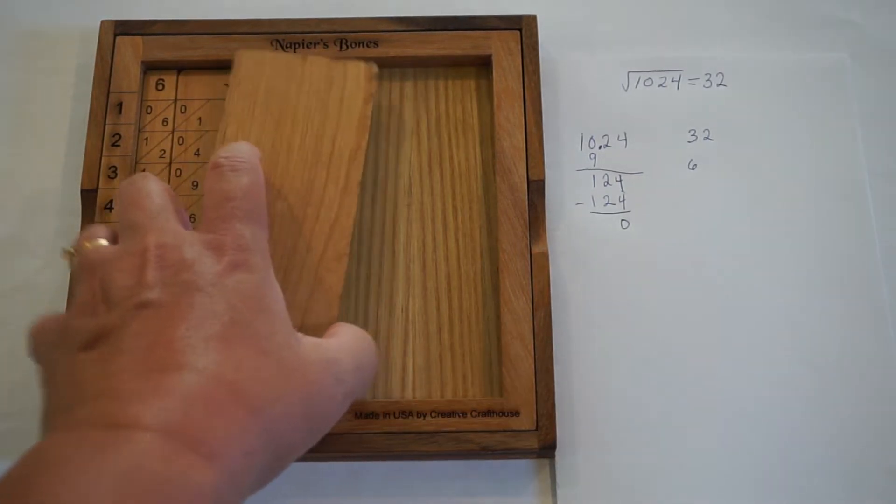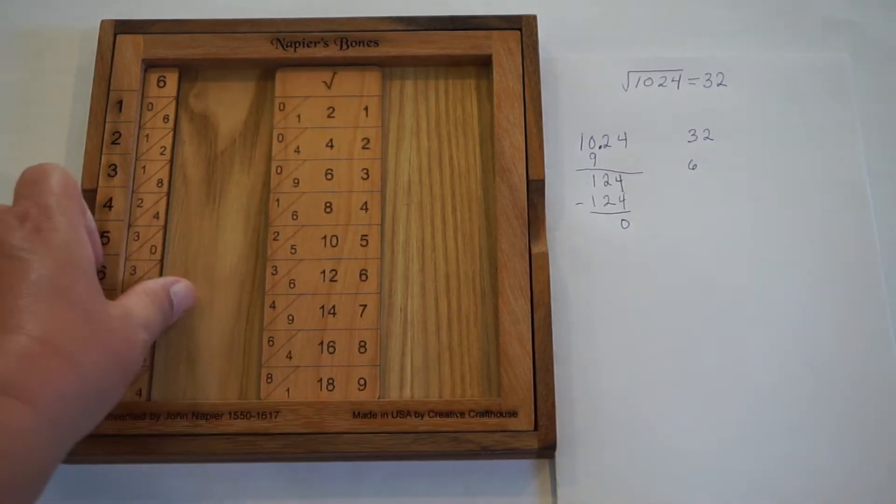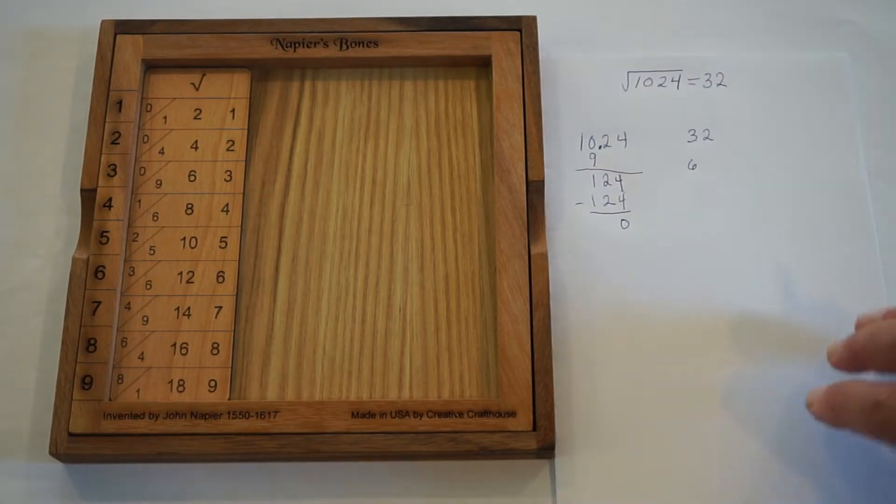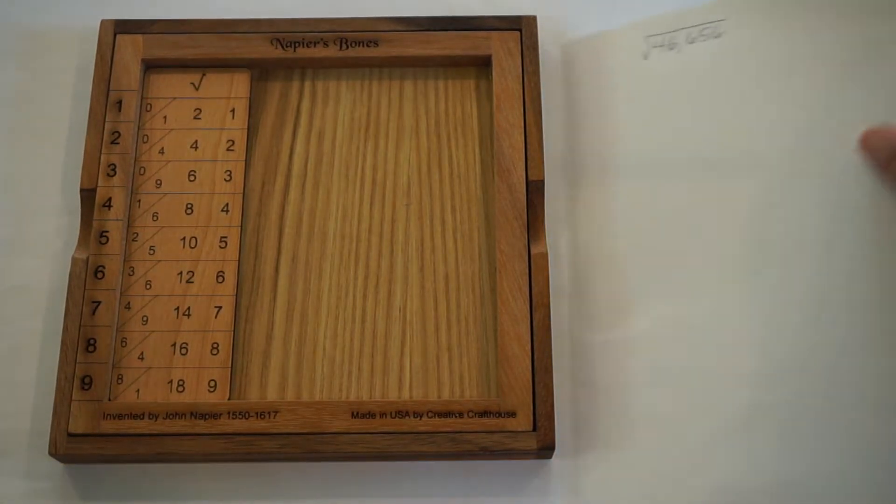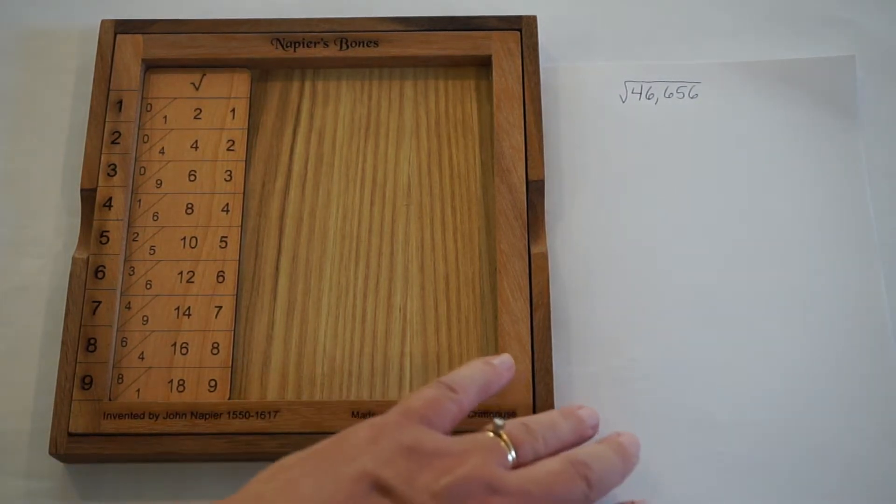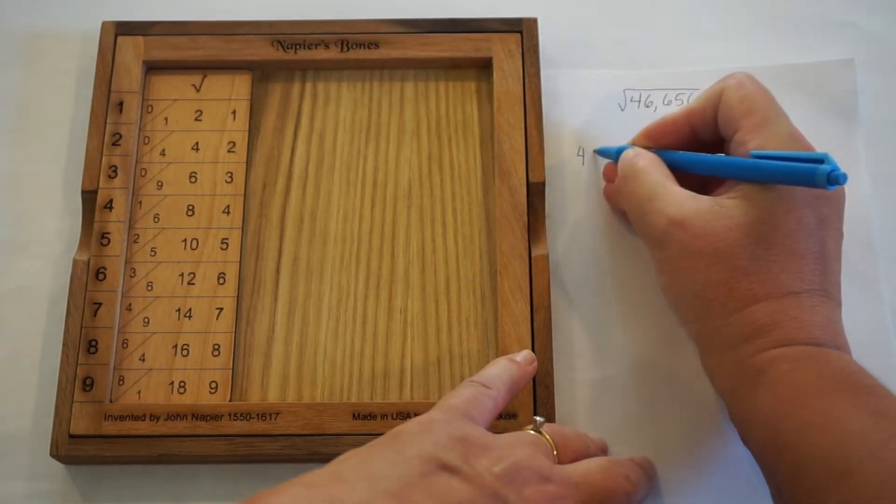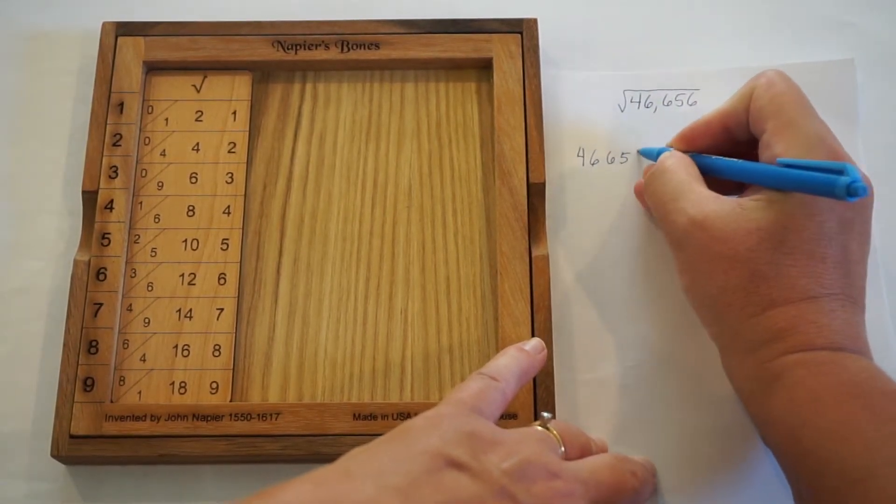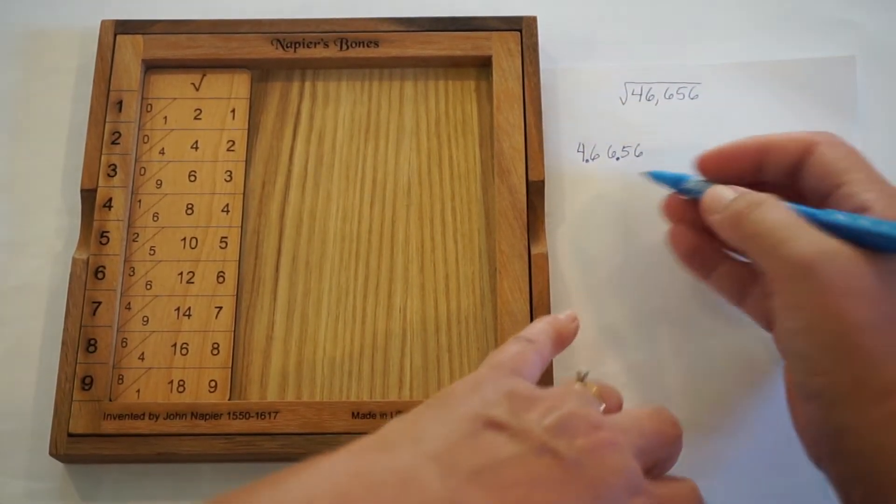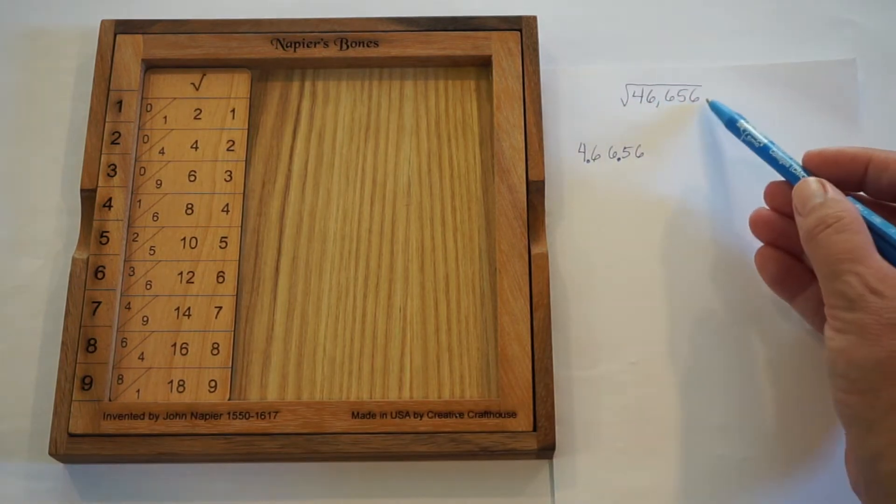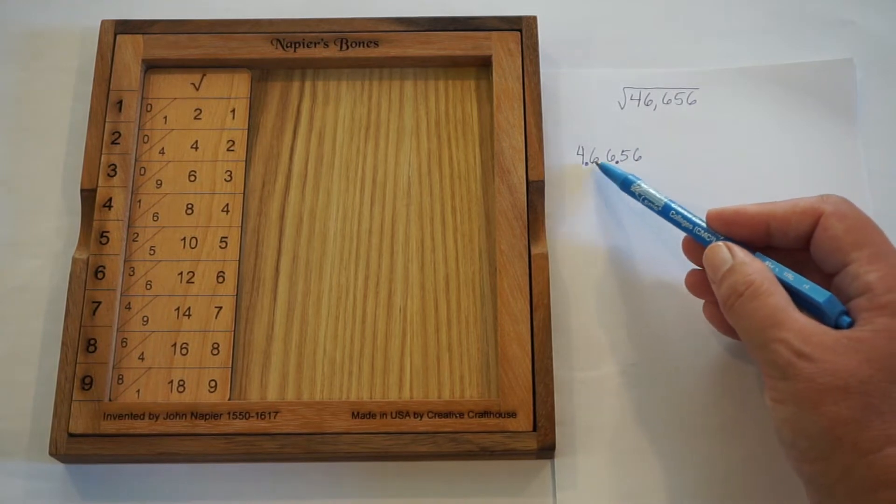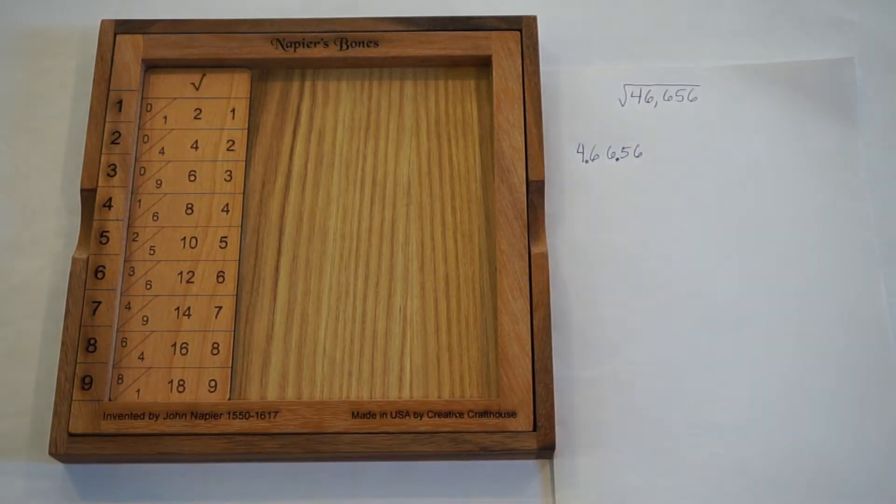And we're going to take on a couple more problems so that you can really get the idea of how to do this. So I'm going to reset the frame. And the next problem we'll do is 46,656. We want to find the square root. So again, I write the number down. And I want to break it up into groups of 2. So I've got two dots this time. I wanted to use a number with an odd number of digits so you could see where to start your groups of 2 from. We start that from the right. We may have a single digit left out front, but that's okay.